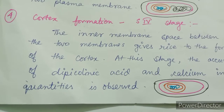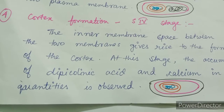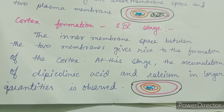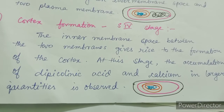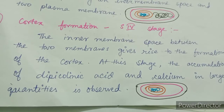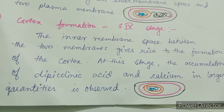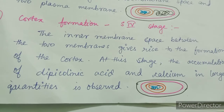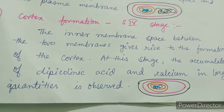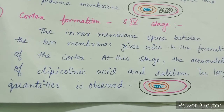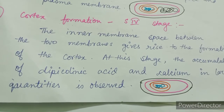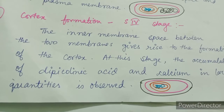The fourth stage is cortex formation. The inner membrane space between the two membranes gives rise to the cortex. At this stage, accumulation of dipicolinic acid and calcium in larger quantities is observed, and the mother cell chromosome is disappeared or destroyed. The cortex is made up of a thick peptidoglycan layer placed between the two membranes surrounding the forespore protoplast, and it provides heat resistance and maintains dormancy.